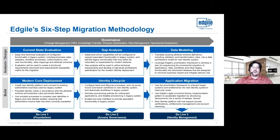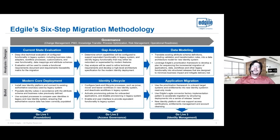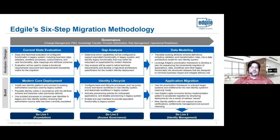The data modeling step leverages the prioritized framework Dylan alluded to earlier. This framework allows us to figure out what data we'll need in our modern solution to fulfill all requirements. We plan, document, and figure out everything we need to build. Then we drop into the second phase: the modern core deployment — the baseline feature set of the new identity platform — with simple connectors to pull data in and validate all use cases.